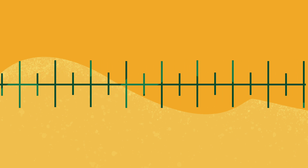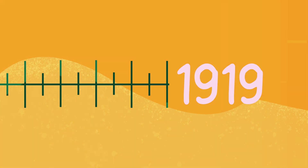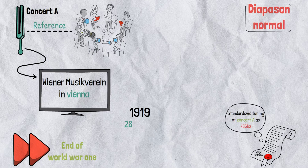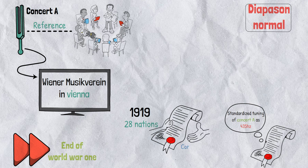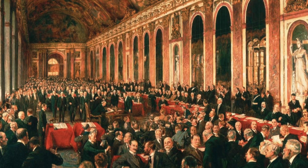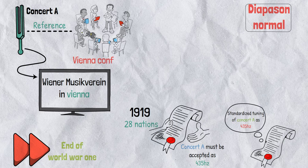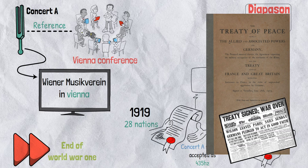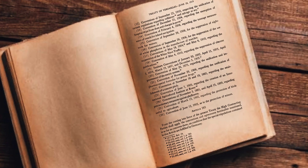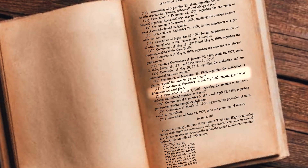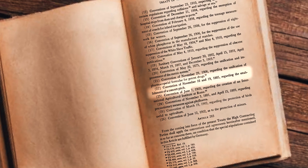Let's skip to the end of World War I. In the year 1919, 28 nations came together and signed a treaty, and in it, it was included that the concert A must be accepted at 435 hertz, as discussed in the Vienna conference. This treaty was the Treaty of Versailles. I am not kidding — it is actually in the Treaty of Versailles.